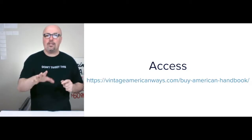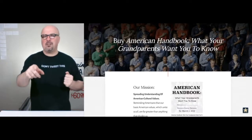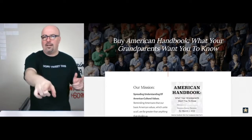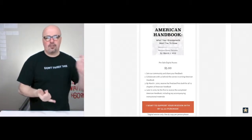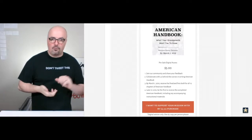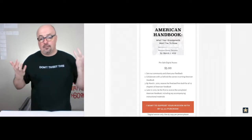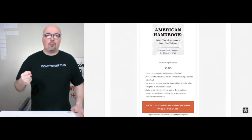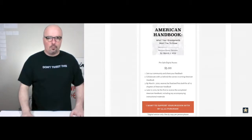The access is through vintageamericanways.com/buy-american-handbook. If you click the American Handbook book cover — a rough draft I threw together, we're going to have a designer do it — it takes you right to checkout. If you scroll down, you see the explanation: you join the community, share your feedback, collaborate behind the scenes. March 1st, you receive the finalized first draft for all 12 chapters together, and then later in 2019 you're the first to receive the completed American Handbook — all for five bucks. It's a great way to support these grandparents that have been curating information on the six basic American cultural values along with a bunch of first-party resources.